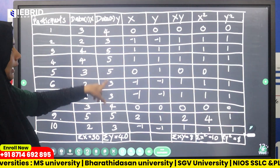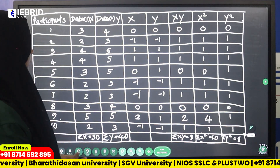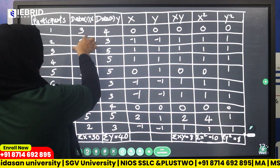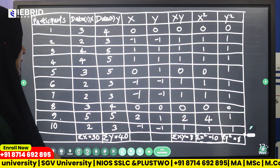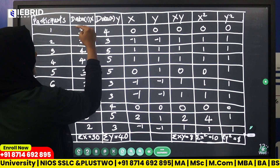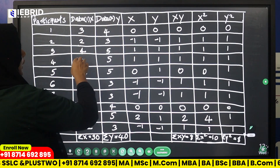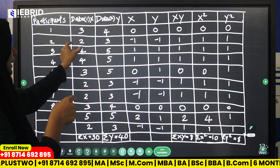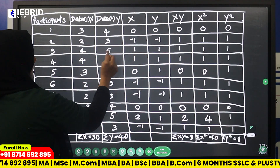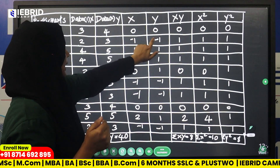We set up a table with Data x and y, and the mean scores. For x, the mean score is 3. So for example, x value 3 minus mean 3 equals 0. Then 2 minus 3 equals minus 1. For y, the mean is 4, so 3 minus 4 is minus 1, 5 minus 4 is 1.